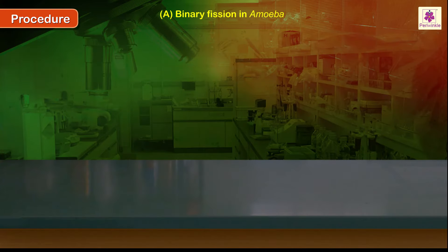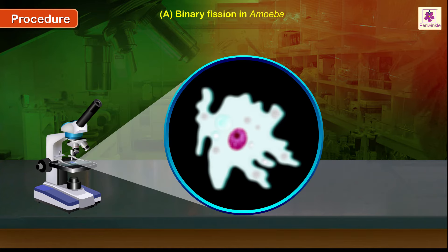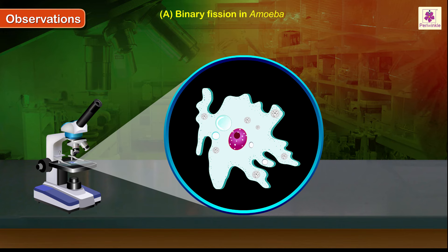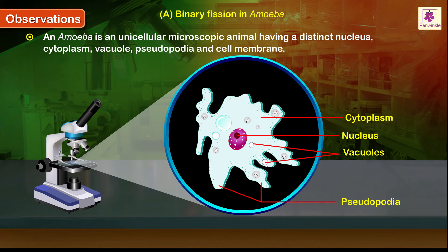Procedure to study binary fission in amoeba: place the permanent slide of binary fission in amoeba on the stage of a compound microscope and secure it well under the clips. Observe the slide first under low power and then under high power. An amoeba is a unicellular microscopic animal having a distinct nucleus, cytoplasm, vacuole, pseudopodia, and cell membrane.